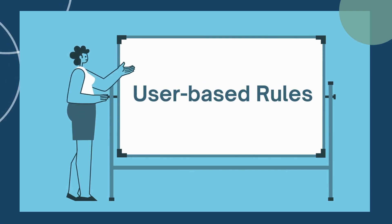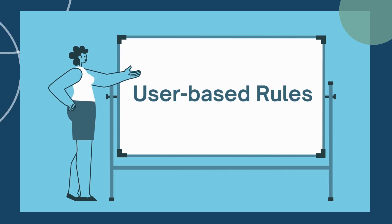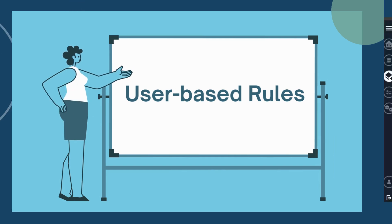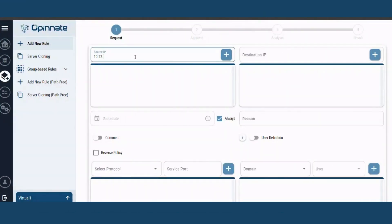In the latest release of OppenAid, user-based rules can now be created automatically. This can be done by using either the Add New Rule or Add New Rule Path-free workflows.